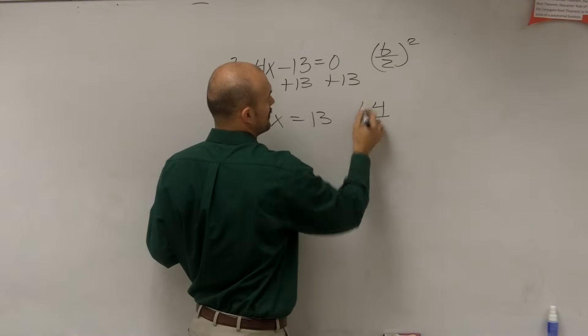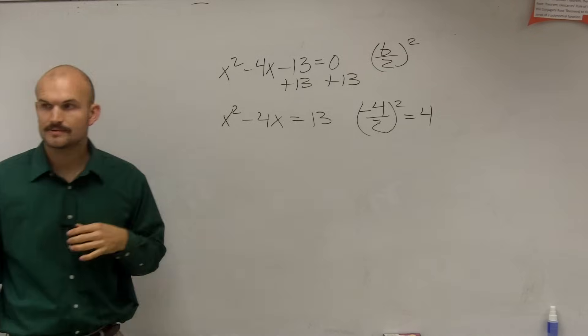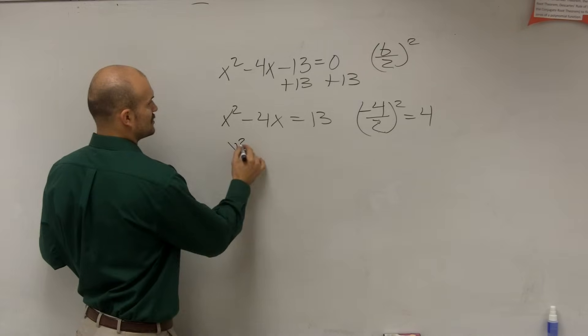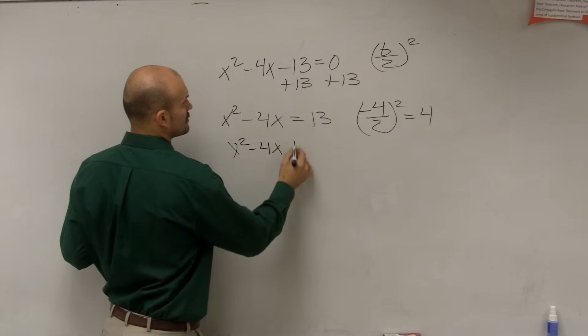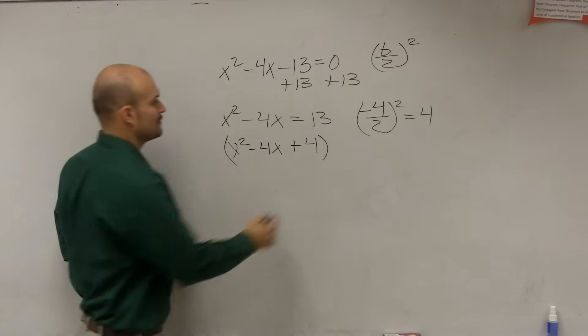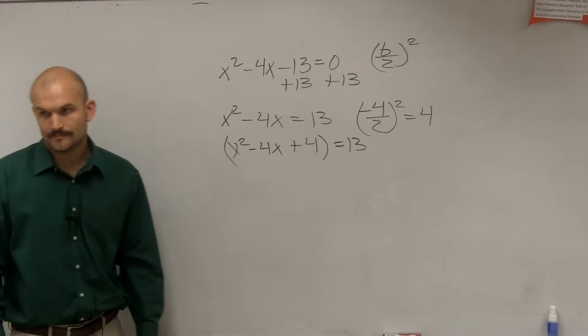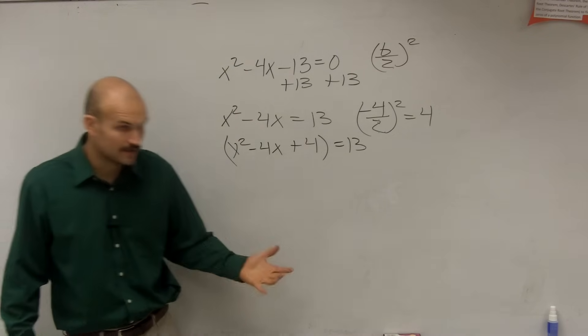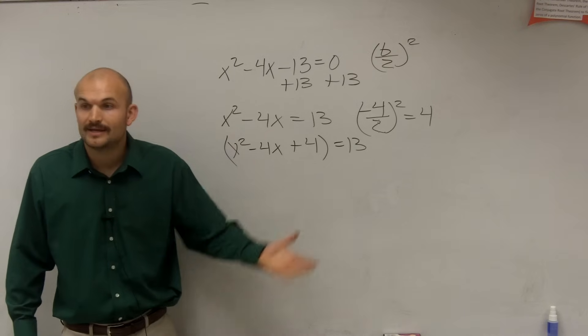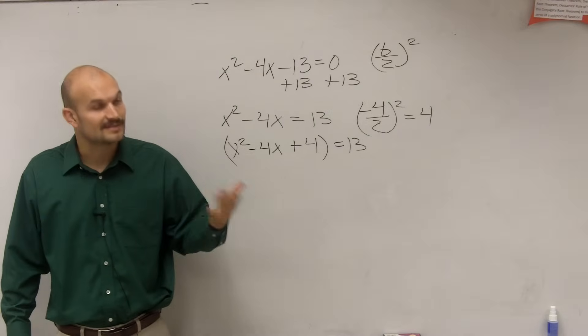So we're going to take negative 4 divided by 2 and square it. And we'll get positive 4, correct? So therefore, we write x squared minus 4x plus 4 equals 13. Now, going back to solving equations, if you do something to one side, what do you always have to do on the other side? The exact same thing. The exact same thing.